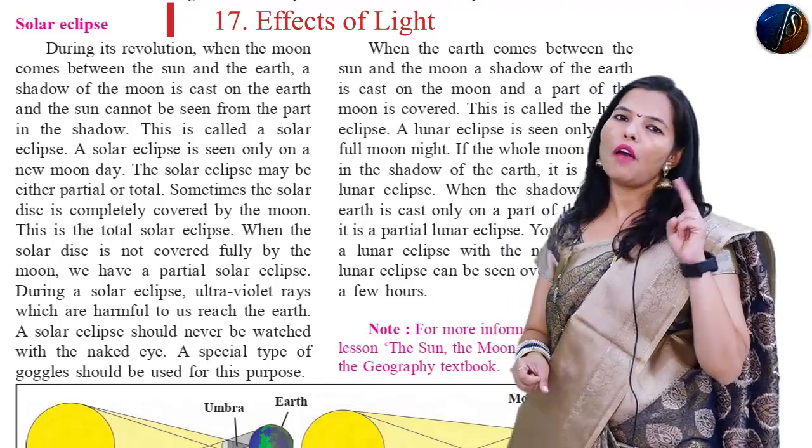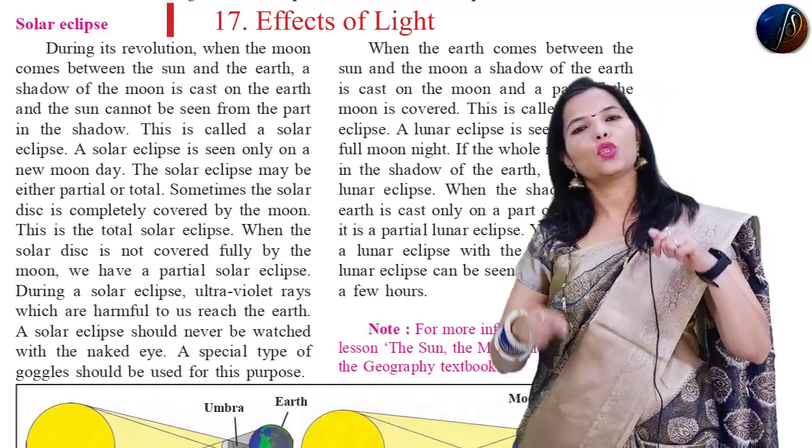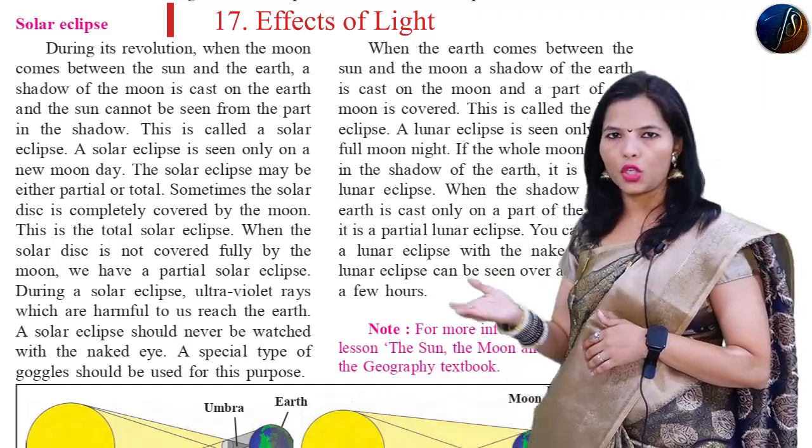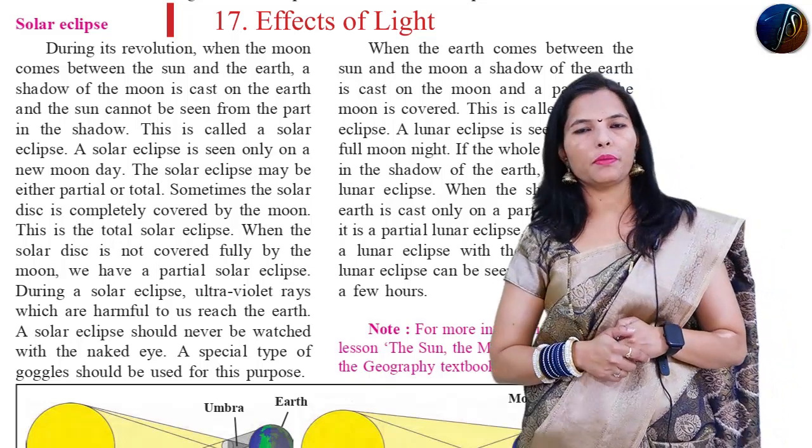Like the Solar Eclipse, the Lunar Eclipse also has two types — that is, total lunar eclipse and the partial lunar eclipse.